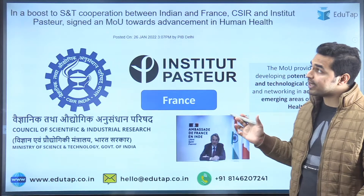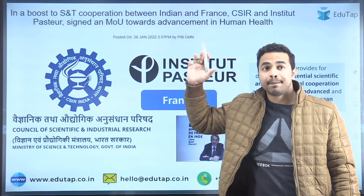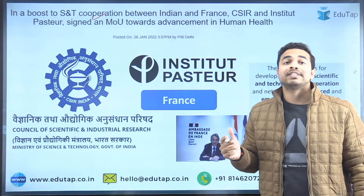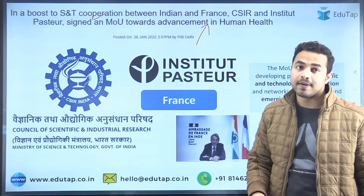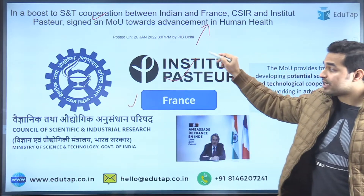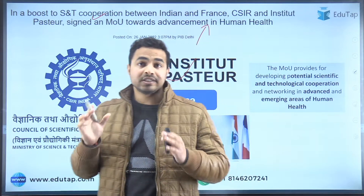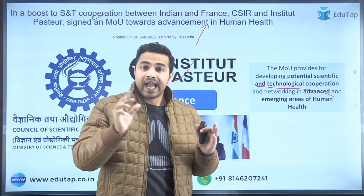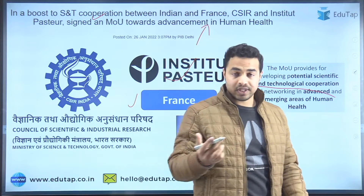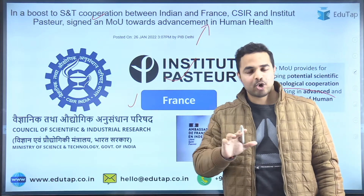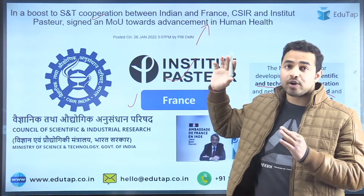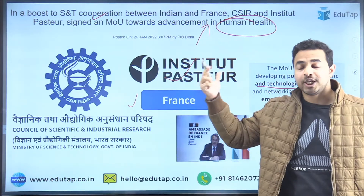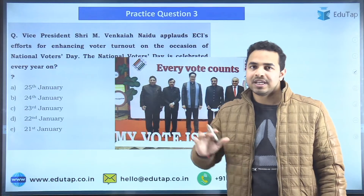The right answer to this question is Option A — France. From the PIB headline itself: in a boost to science and technology cooperation between India and France, CSIR and the Institut Pasteur of France have signed an MOU towards advancement in human health. This MOU provides for developing potential scientific and technological cooperation and improving networking in advanced and emerging areas of human health.